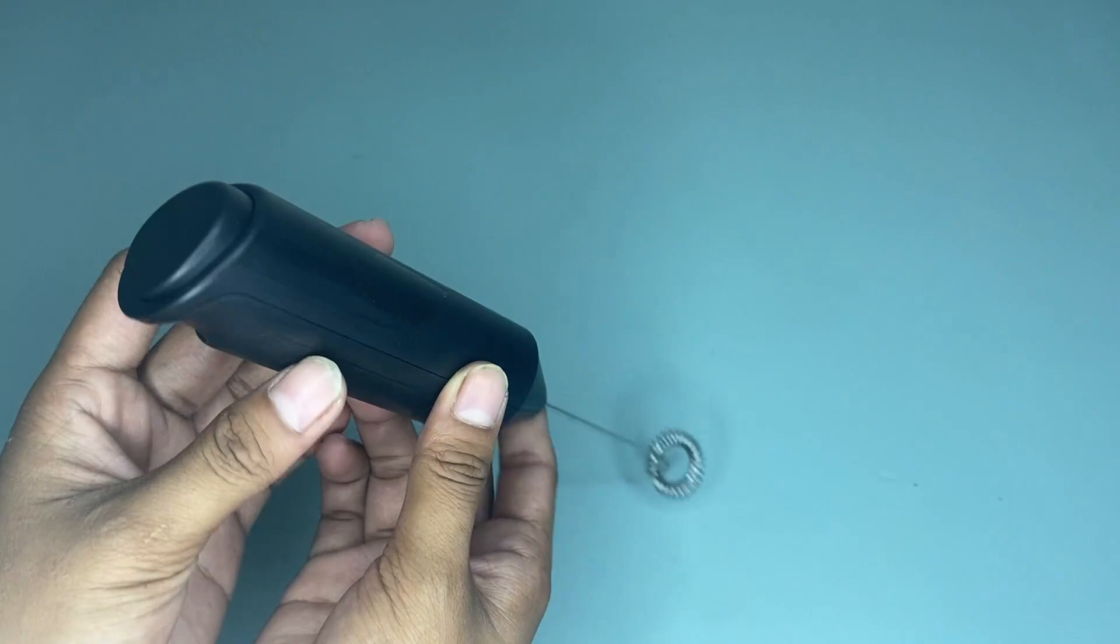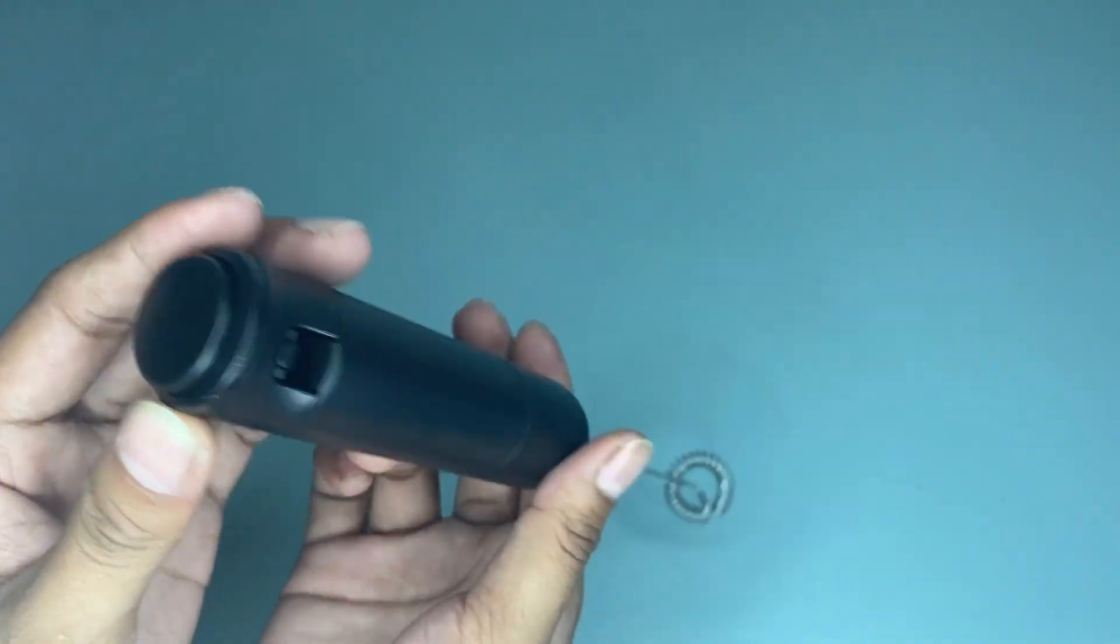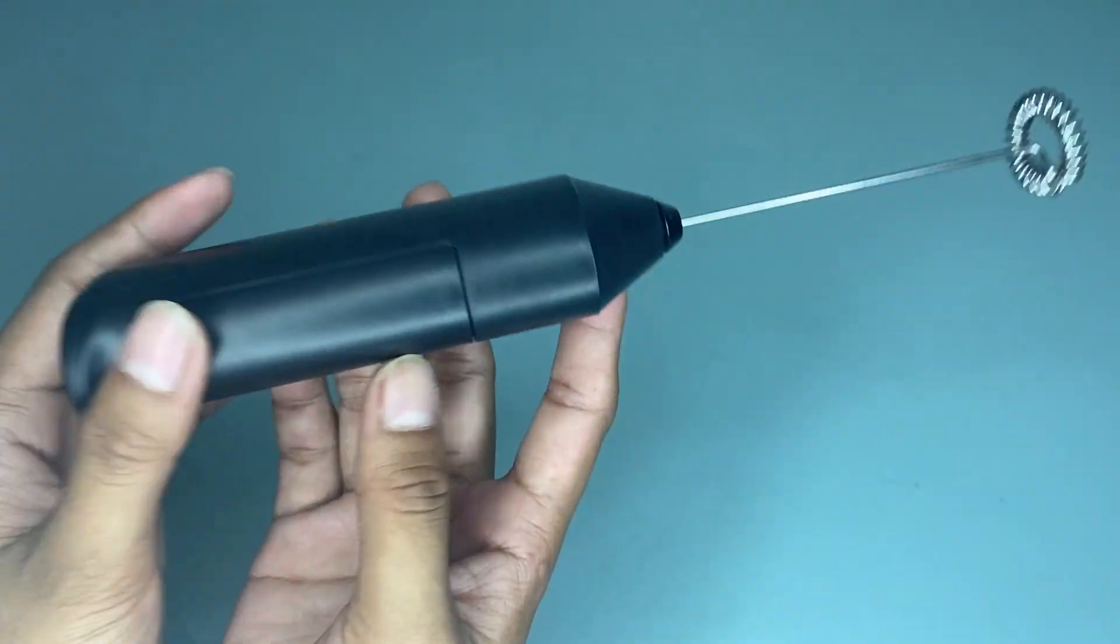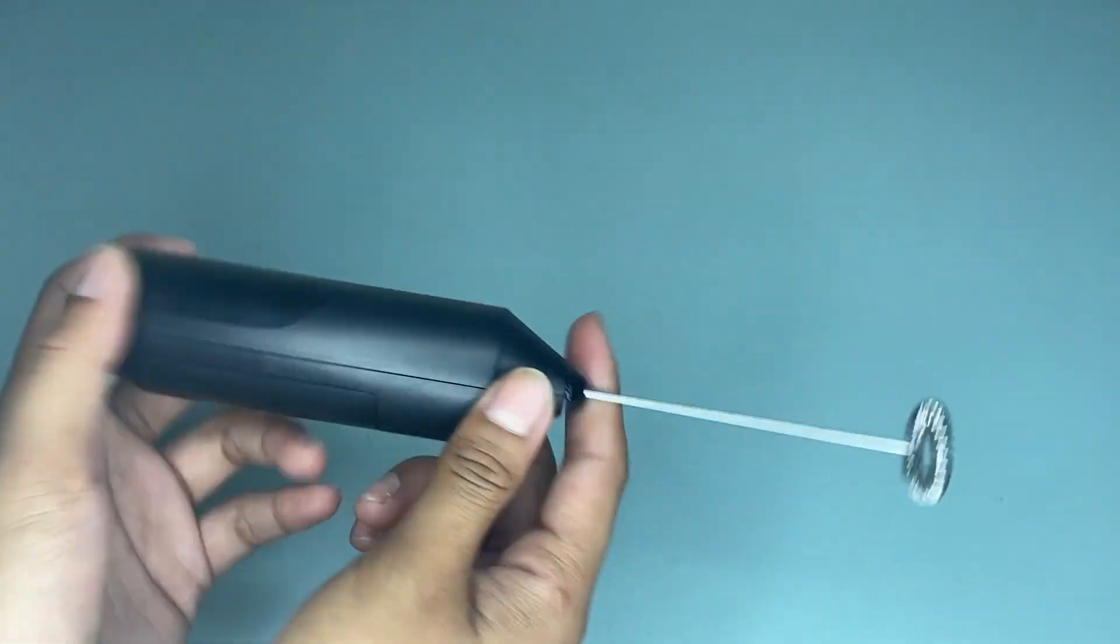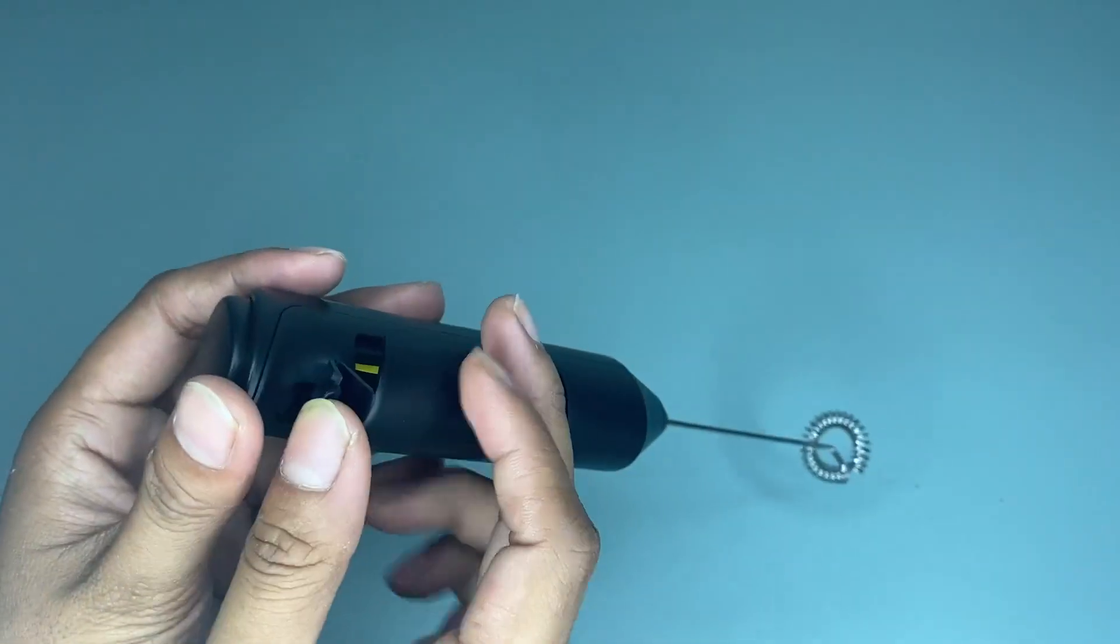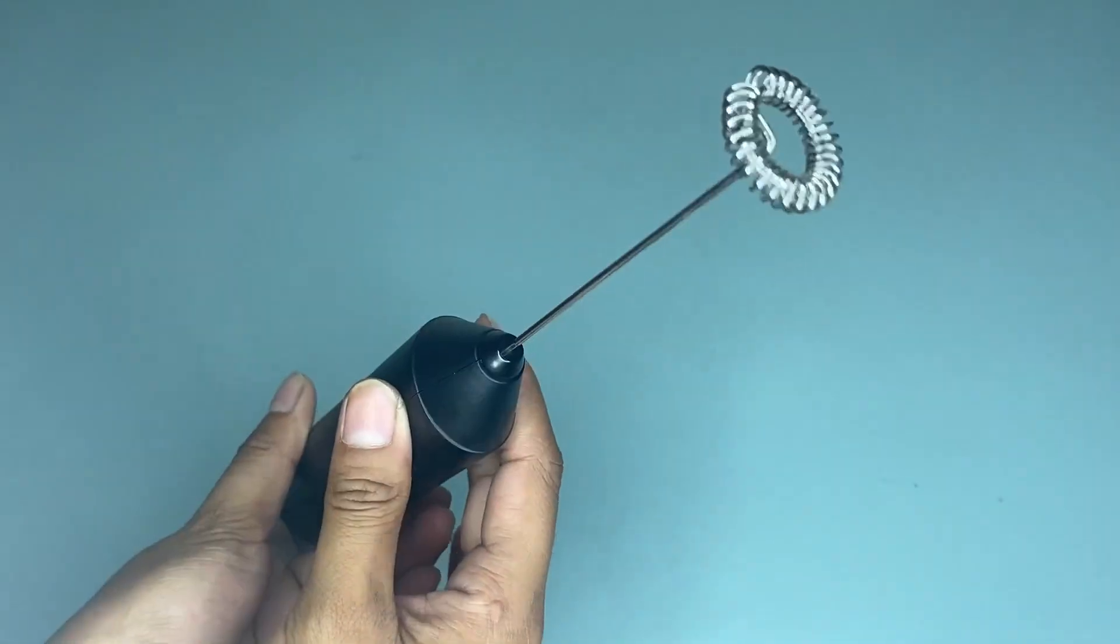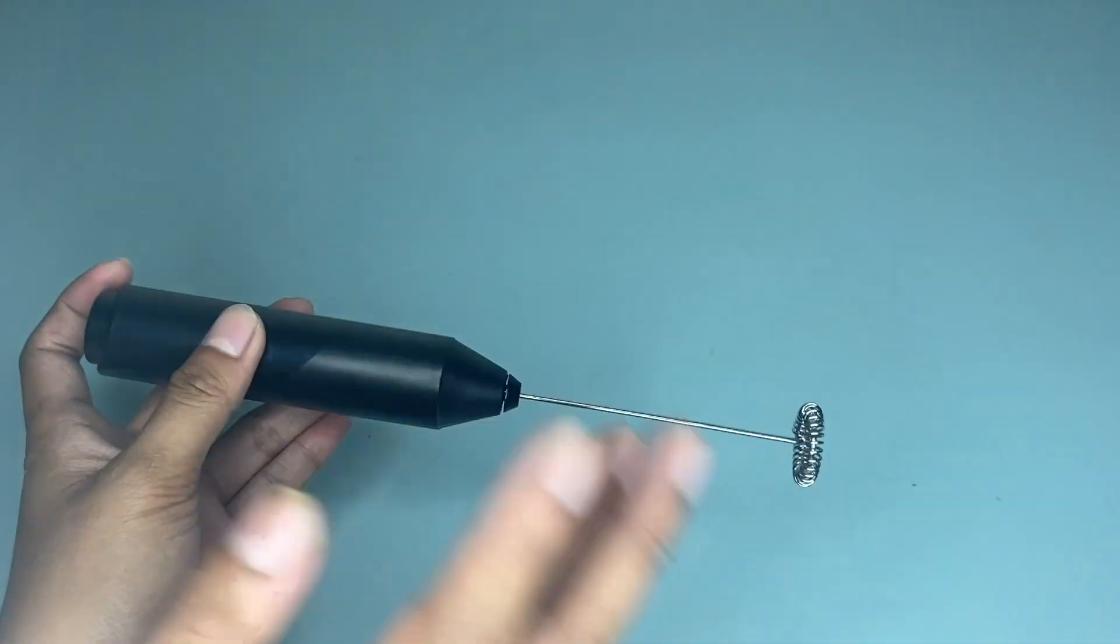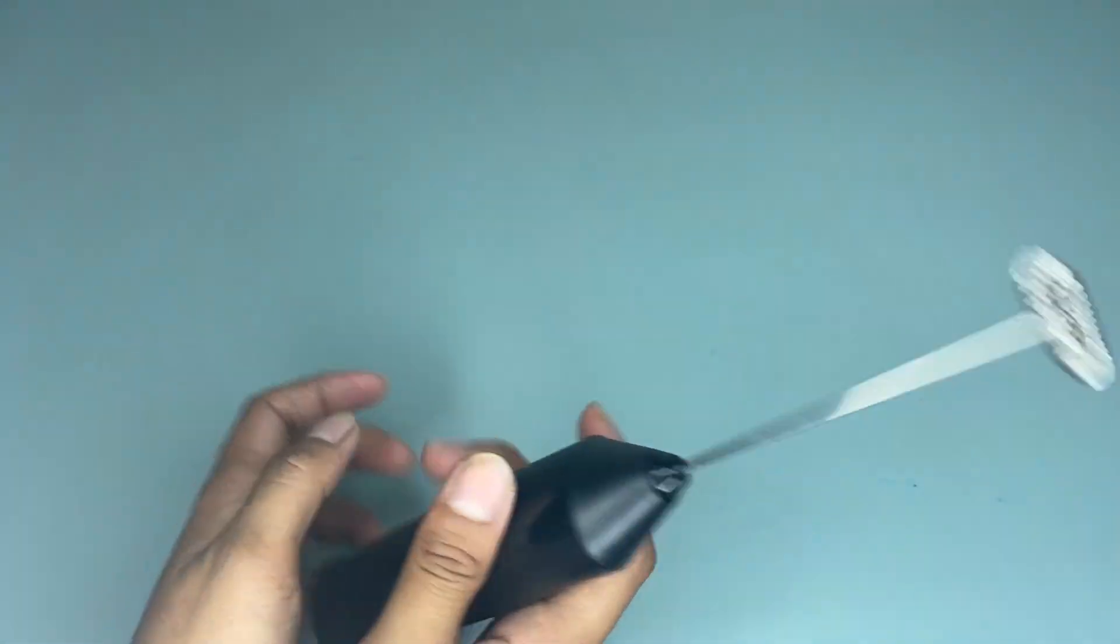As you can see, this frother is battery operated by two double A batteries. It has a simple one-touch button with a low noise level. All you have to do is put it into a container with liquid, approximately one-third full to froth, and it will stop automatically.